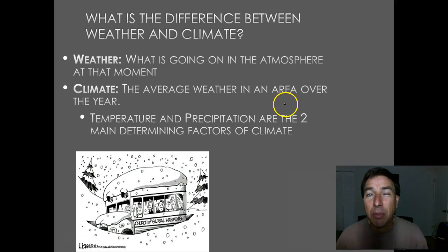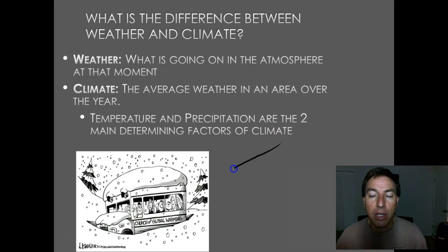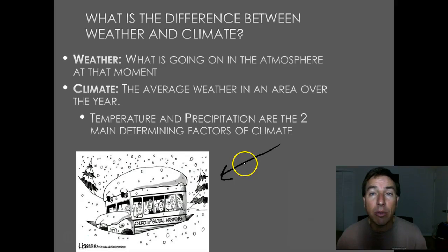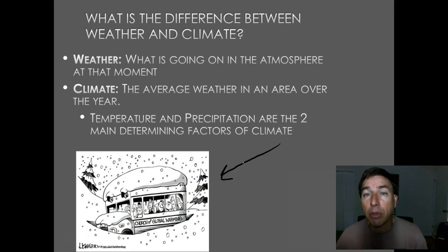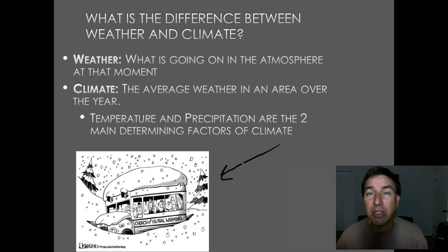A lot of people get these mixed up, especially the media and politicians. They confuse things by saying that one daily weather event or one season's worth of heavy snowfall debunks climate change, or that one major tropical storm proves climate change. This is a major mistake — confusing climate with weather — and we don't want to make that mistake.